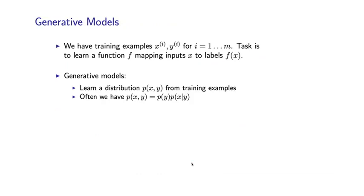So in generative models, we again assume this scenario where we have training data, nothing changes here. And the task is again to learn a function that maps inputs x to labels f(x). And in generative models, we actually do something slightly different from what I showed you before, in that we're going to learn a joint distribution p(x,y) over inputs x paired with labels y.